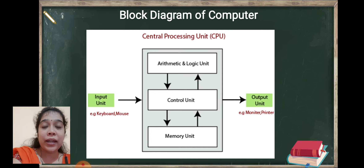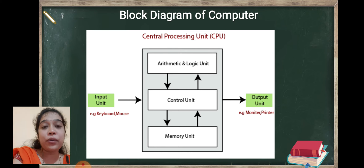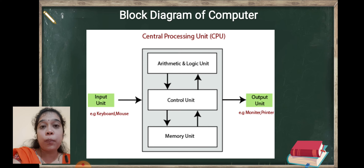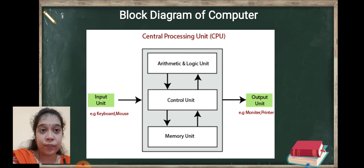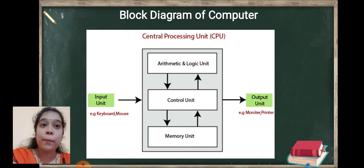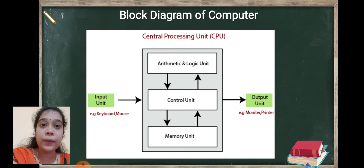First we see arithmetic and logic unit. What is arithmetic and logic unit? Whatever data we provide to the computer, by using the arithmetic and logic unit, computer processes that data according to arithmetic and logical operations. Hence arithmetic and logic unit, that is ALU, is the brain of the computer. By using this, the computer performs different arithmetic and logical operations on the data.